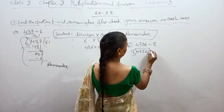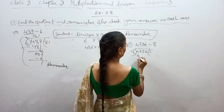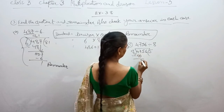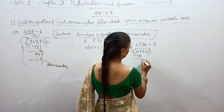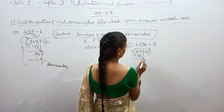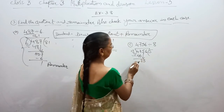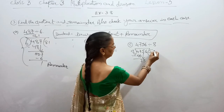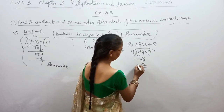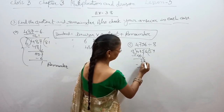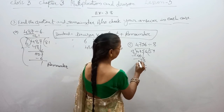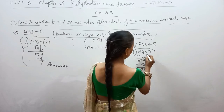8 into 47 — 8 fives are 40, minus 47 minus 40 gives 7. Carry down 5 to make 75. 8 into 75 — 8 nines are 72, minus 75 minus 72 gives 3. So we have 3 remaining, and the partial quotient so far is 59.